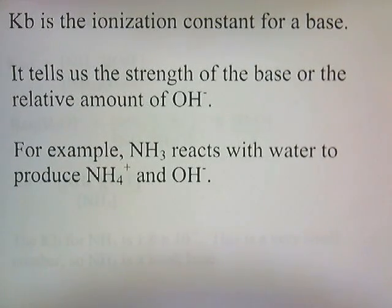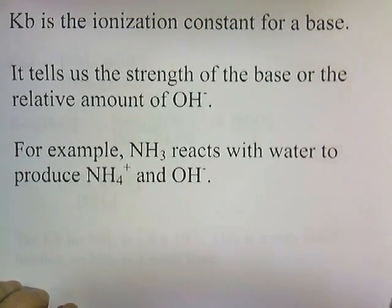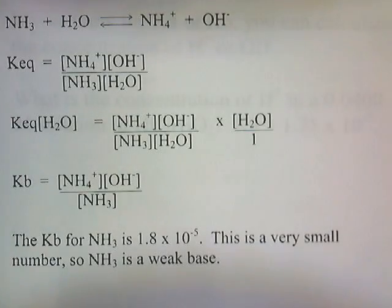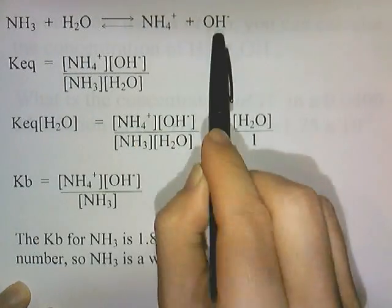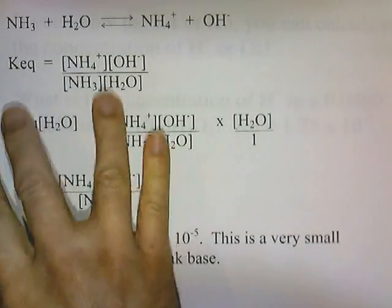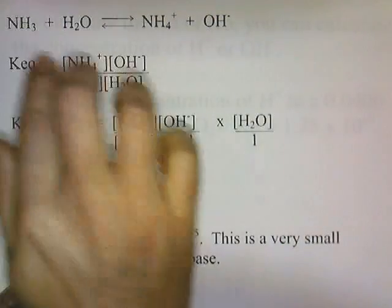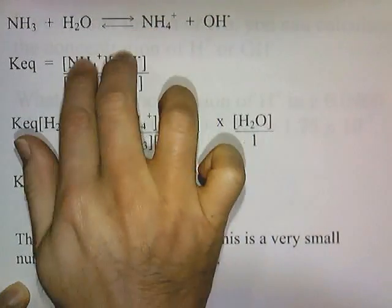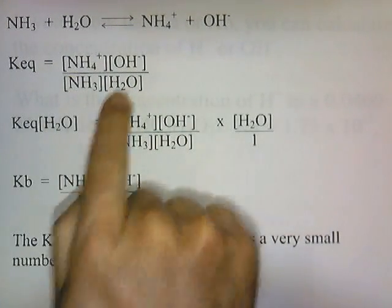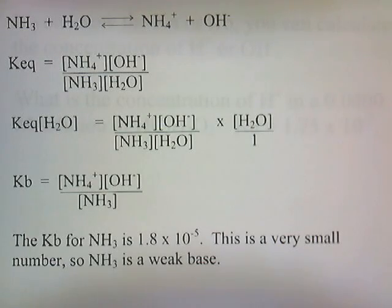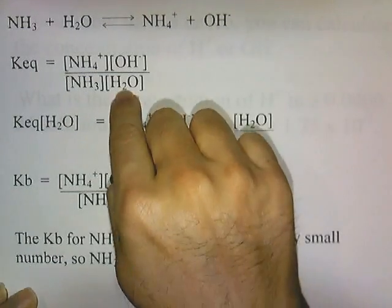KB is the ionization constant for a base. It tells us the strength of the base, or the relative amount of hydroxide. For example, ammonia reacts with water to produce ammonium and hydroxide. NH3 reacts with H2O to produce NH4+ and hydroxide. The equilibrium constant expression is products over reactants — NH4+ and OH⁻ go on top, and NH3 and H2O go on the bottom.